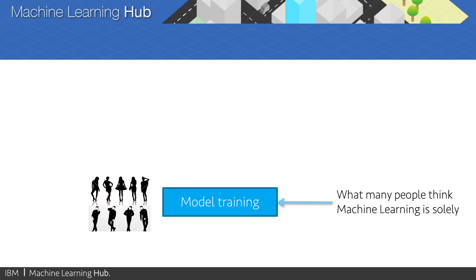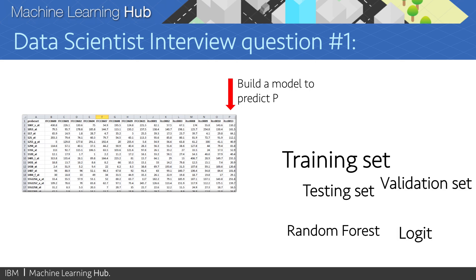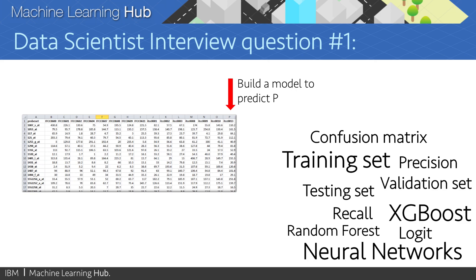One of the questions I ask when interviewing aspiring data scientists is, if I give you a dataset with certain characteristics, how would you go about building a model to predict a certain variable? And many folks jump right away into creating a testing set, training set, validation set, and they tell me how they would run their favorite random forest, logistic regression, XGBoost, neural networks, and calculate the confusion matrix, precision, recall, area under the receiver operating characteristic curve, and then select the model that has the best performance.